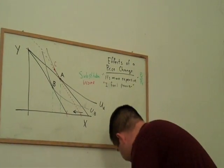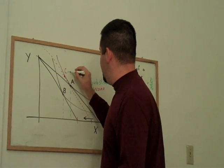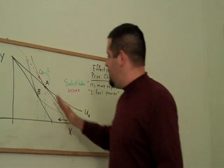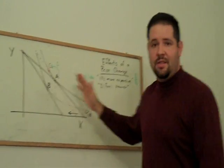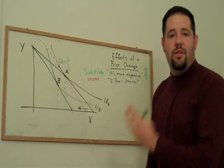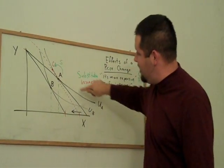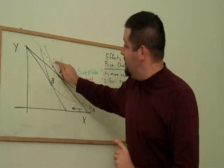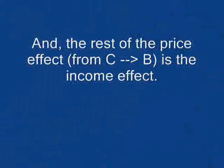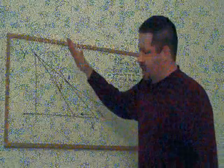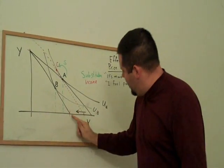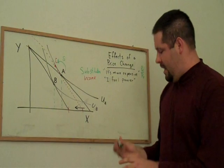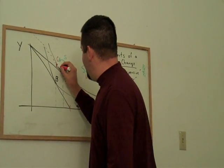One effect — that's going to be our substitution effect — is to go from bundle A to bundle C. Notice that the whole change in this person's consumption moving from bundle A to bundle C is just due to the change in the relative prices. Remember, the tangency is where the marginal rate of substitution equals the ratio of the prices. This change from bundle A to bundle C is only due to the change in relative price. Now these two budget lines are parallel, so there's no change in relative prices. The only change between the black line with bundle B and the red line with bundle C is income. And so we can go ahead and label this as our income effect.